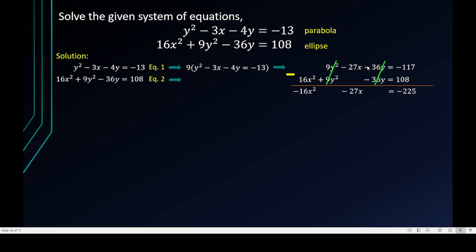After subtraction: 0 − 16x² = −16x², −27x − 0 = −27x, and −117 − 108 = −225. Simplifying: −16x² − 27x + 225 = 0. You may optionally multiply through by −1 to make the leading coefficient positive, but since this is part of the working it is not required. This is now a quadratic equation in x.